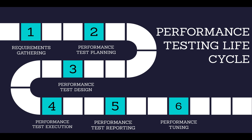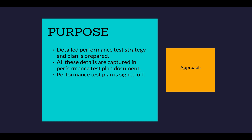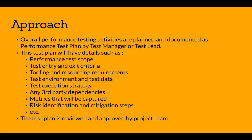The next step is performance test planning. Based on the gathered requirements, a detailed performance test strategy and plan is prepared and captured in the performance test plan document, which is signed off by the client and business stakeholders. Overall performance testing activities are planned in this phase — when to start, which tests to run, and how to log issues. This is typically done by the test manager or test lead.